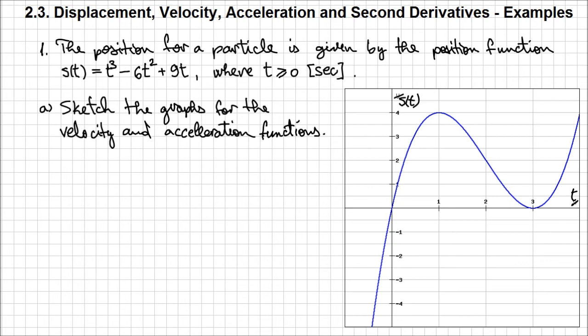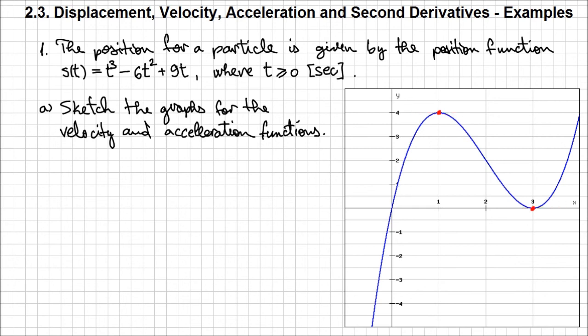We need to remember the connection between displacement and velocity — velocity is the first derivative of displacement. Looking at the graph of the position function, we can identify particular points where the slope of the tangent to this curve is known. As we move along the curve from left to right, we identify that when t is 1 and t is 3, the slope of the tangent is zero. So I can place these two points at t = 1 and t = 3 on the t-axis, where the velocity function will intersect the t-axis.